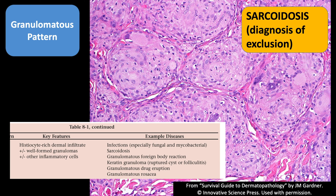Also in the skin, remember to polarize whenever you see granulomas. The skin often gets foreign material in it from previous injury, so finding polarizable material in the granulomas can be really helpful. It's also really useful to think about ruptured hair follicles and cysts, which will make keratin-based granulomas.